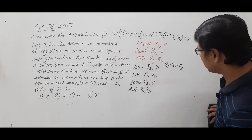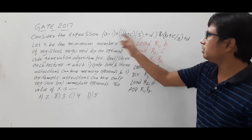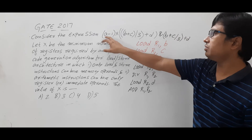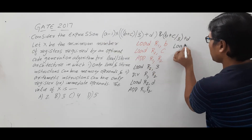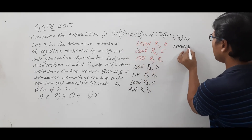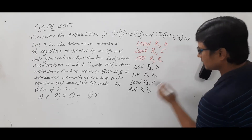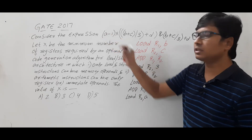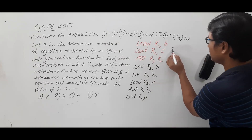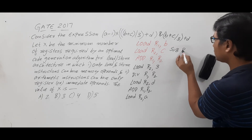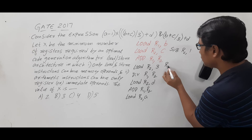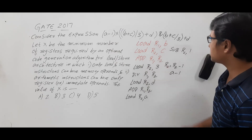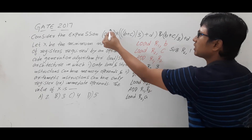Now I need to compute a minus 1 and then multiply. This value is in r1 and I don't want to lose it. So I will load the a value into register r2: LOAD r2, a. Then I perform subtraction: r2 = r2 minus 1. Since r2 holds a, the result is a minus 1, stored in r2. So r2 holds (a minus 1) and r1 holds (b plus c) / 3 plus d.